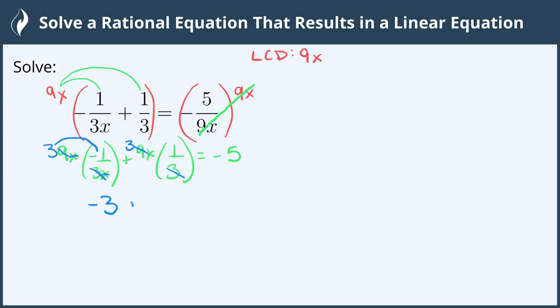No x's cancel so we have plus 3 times x times 1 is 3x and we still have the negative 5 here.